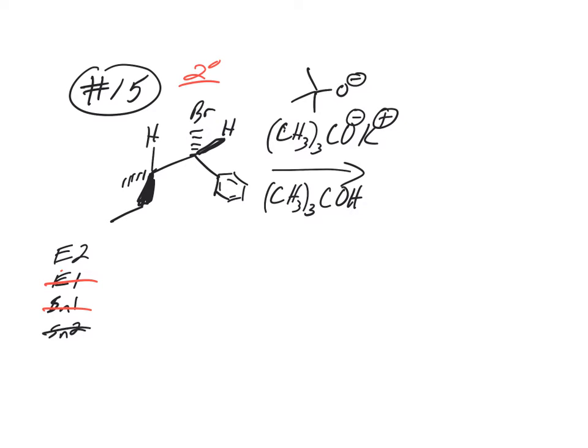Large base, not going to do SN2. Now, once you have E2, you've got to find your beta hydrogens. How many types of beta hydrogens are there? Just one. Carbon one, carbon two. There are no hydrogens on carbon three, so there's only one type of beta hydrogen. It's this one on carbon one.